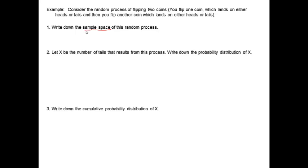Sample space of a random process is merely the listing of all possible outcomes of that random process. In this case, we can get two heads, we can get tails heads, or we can get heads tails, or we can get two tails. So these four outcomes is the sample space of flipping two coins.